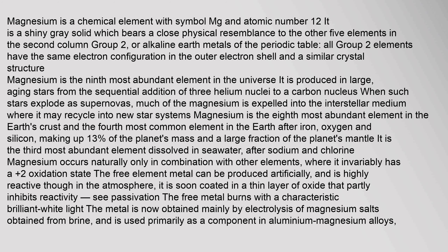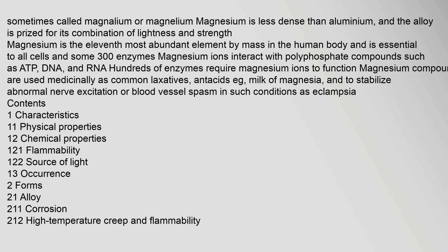Magnesium is a chemical element with symbol, sometimes called magnolium or magnelium. Magnesium is less dense than aluminium, and the alloy is prized for its combination of lightness and strength. Magnesium is the 11th most abundant element by mass in the human body and is essential to all cells and some 300 enzymes.